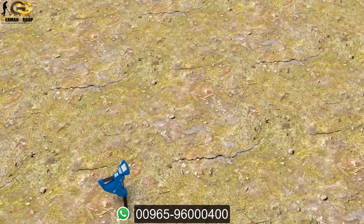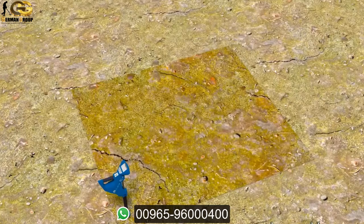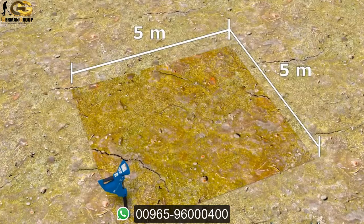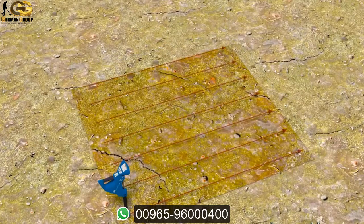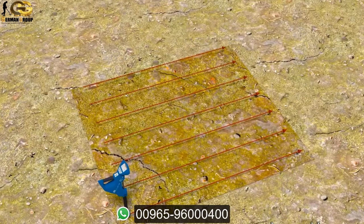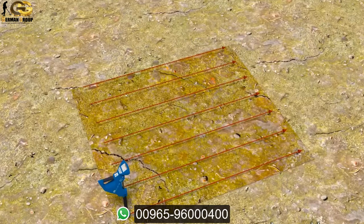For this example we will define an area of about 5 by 5 meters. You always start on a corner and scan from right to left as seen in this example.